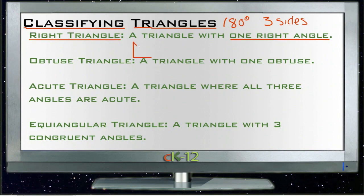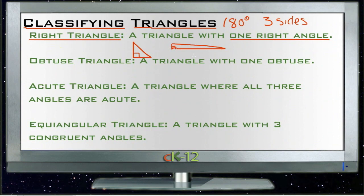A right triangle can be of any shape. It can be a right isosceles triangle, or it can be long and low, stretching way out. It can also be tall and narrow, tilted outside. As long as there is one 90-degree angle, it's a right triangle.